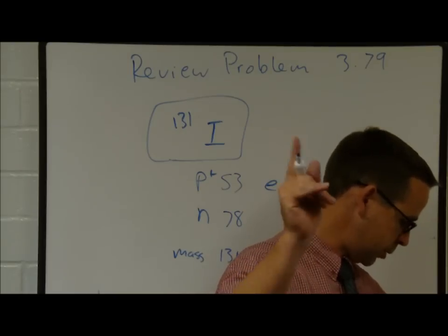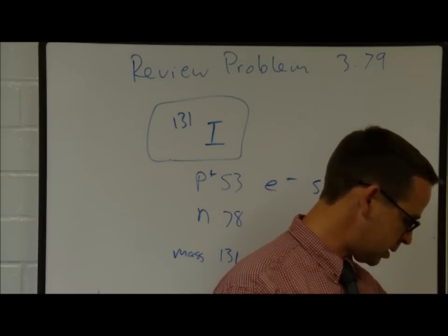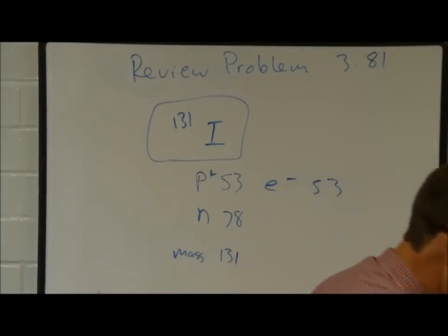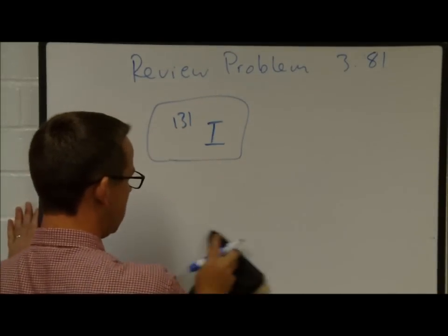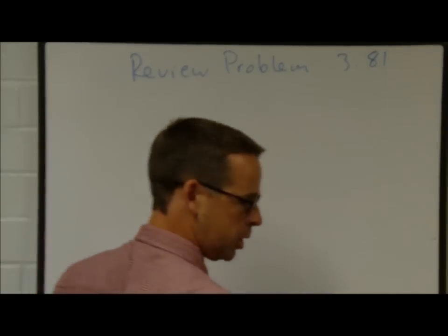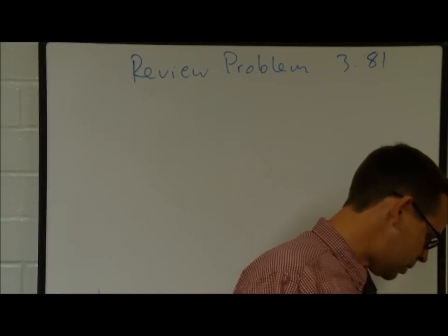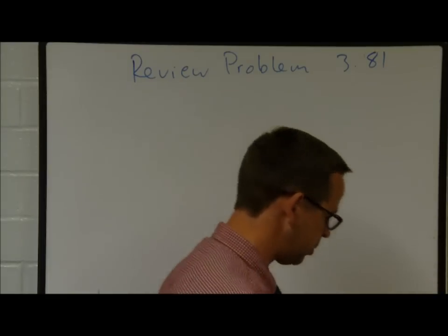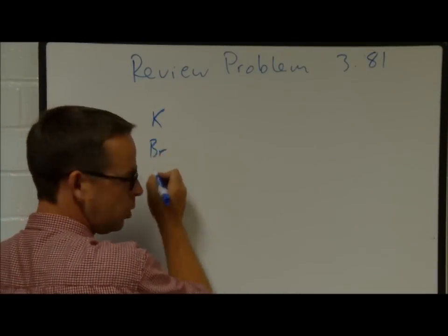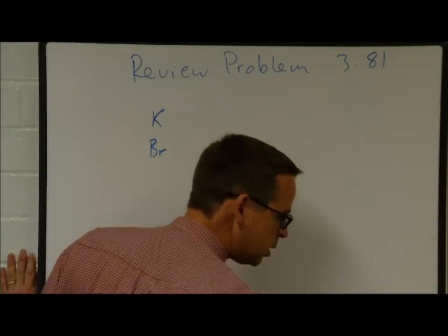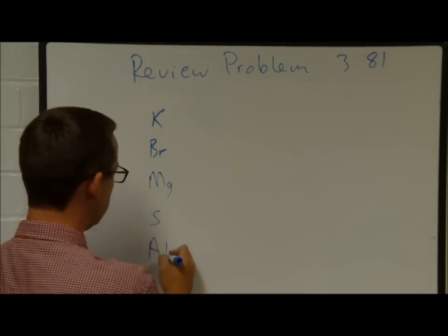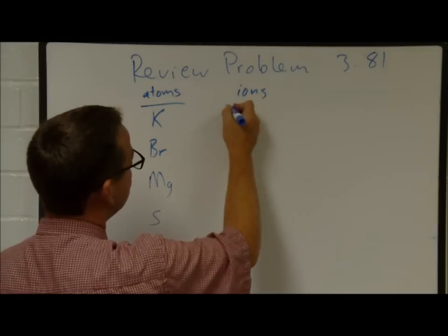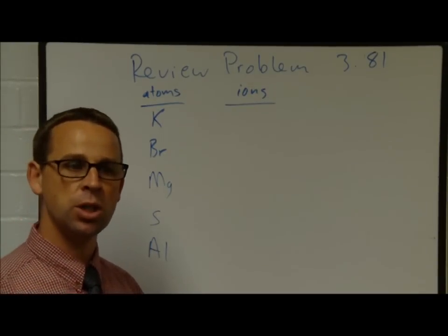Problem 381: Use the periodic table to write the symbol for the ions of potassium, bromine, magnesium, sulfur, and aluminum. All elements form ionic compounds in order to attain the electron configuration of a noble gas — they want to have the same number of electrons as the noble gases.